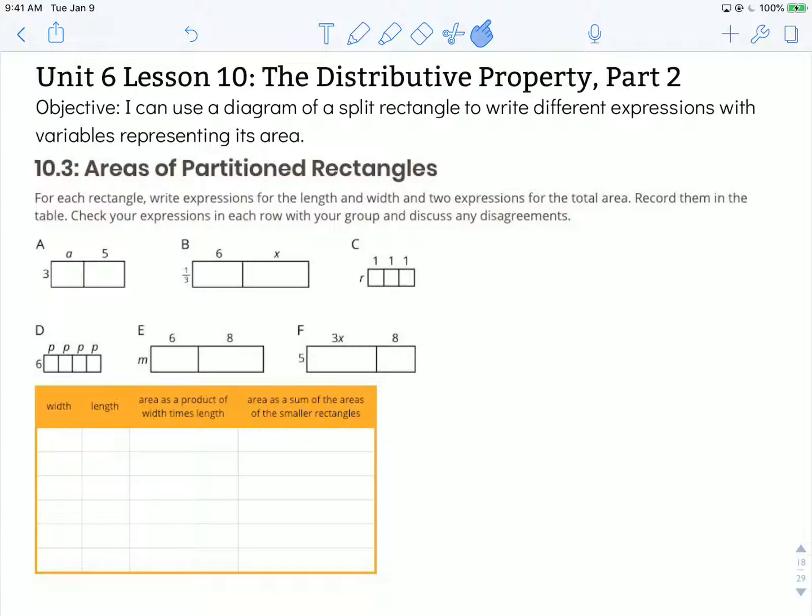The directions read: for each rectangle write expressions for the length and width, and two expressions for the total area. Record them in the table. Check your expressions in each row with your group and discuss any disagreements.